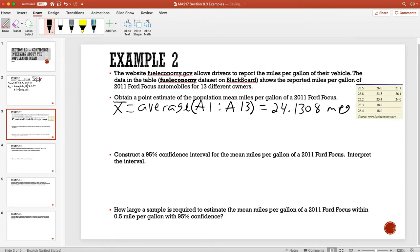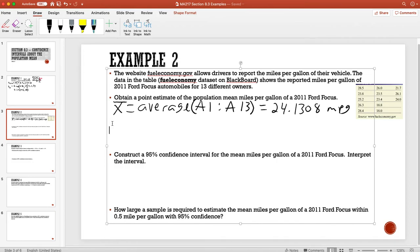To write that as an interpretation, the average miles per gallon of the 13 Ford Focus automobiles - the average of the 13 2011 Ford Focus automobiles is 24.1308 miles per gallon.